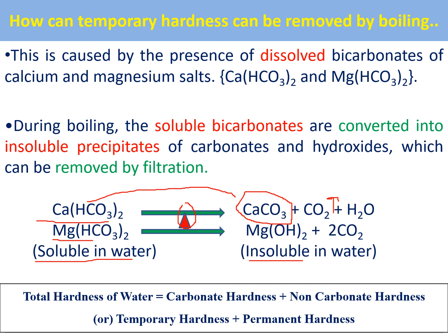The same principle applies: when you heat the water, the soluble things present in the water convert into insoluble things that can be easily removed. When you heat the water, magnesium bicarbonate — which is soluble in water — converts into magnesium hydroxide, which is a precipitate. We can then easily remove the calcium carbonate and magnesium hydroxide by filtration — that is how we remove the temporary hardness. Total hardness equals carbonate hardness plus non-carbonate hardness, or temporary plus permanent hardness.